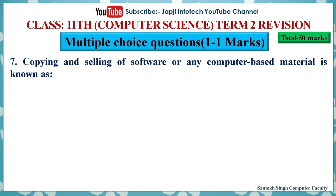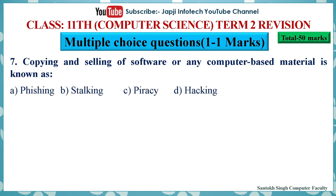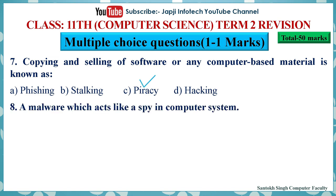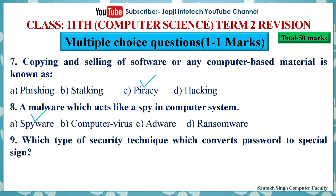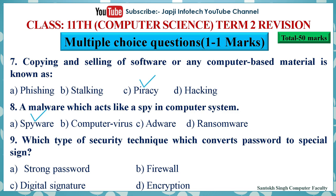Question 7: Copying and selling of software or any computer-based material is known as — options are phishing, stalking, piracy, or hacking. The right answer is piracy. Question 8: A malware which acts like a spy in a computer system — options are spyware, computer virus, adware, or ransomware. The right answer is spyware. Question 9: Which type of security technique converts a password to a special sign — options are strong password, firewall, digital signature, or encryption. The right answer is encryption. Question 10: IT act 2000 is also known by which other name — options are IT act 2008, ITA 2000, information set, or income tax act. The right answer is ITA 2000.